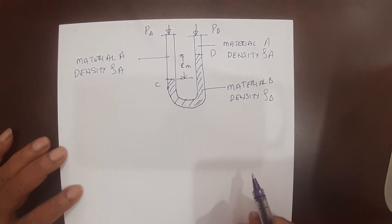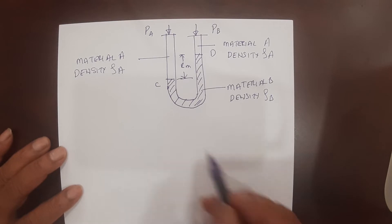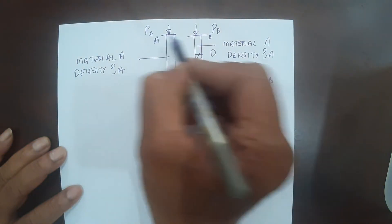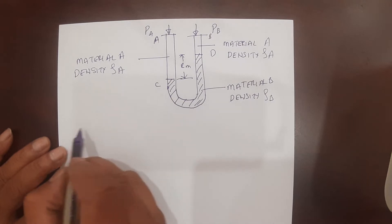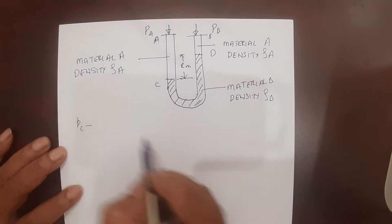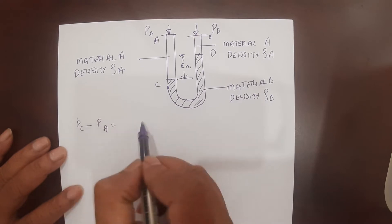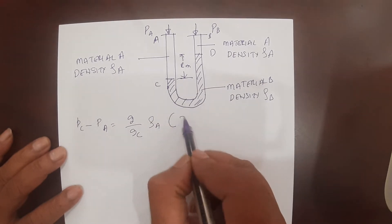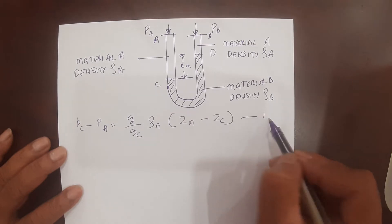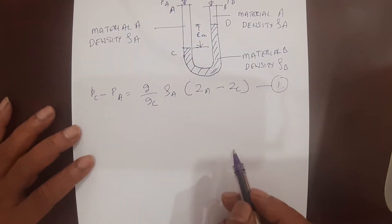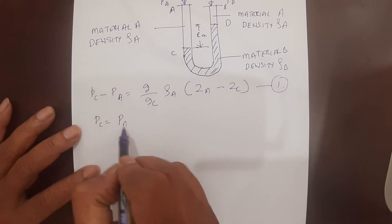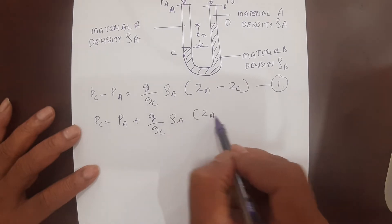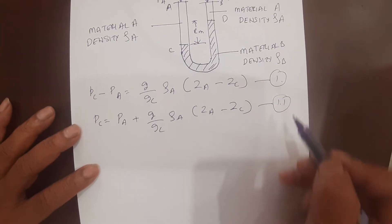We apply the hydrostatic equilibrium condition between stations. I call this station A, and the others station B, C, and D. Applying the hydrostatic equilibrium condition between A and C gives: P_C minus P_A equals (G/Gc) × rho_A × (Z_A minus Z_C). Rearranging, P_C equals P_A plus (G/Gc) × rho_A × (Z_A minus Z_C). This is Equation 1.1.